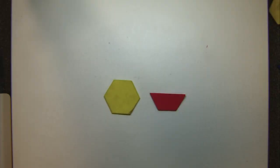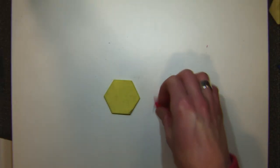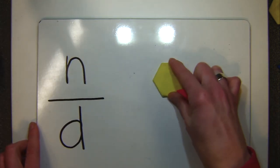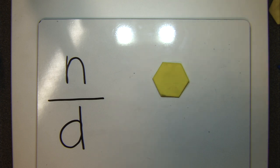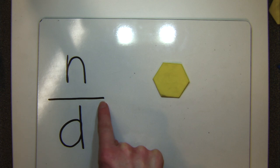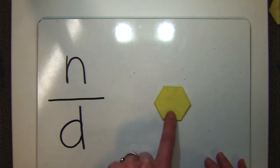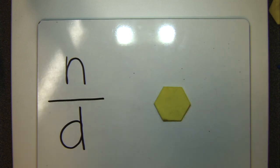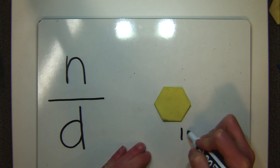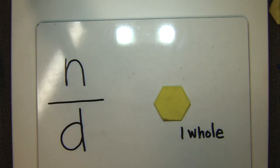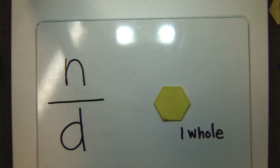Once we know that the hexagon is our whole shape, we can start to break it down into smaller equal parts. I'm going to use this yellow hexagon as our starting point, and I'm going to slide over this whiteboard. A fraction, when we write or name it, has two parts: it has a numerator and it has a denominator. The numerator is the number that goes on top of our fraction bar, and the denominator is the number that goes on the bottom.